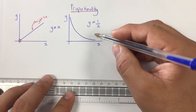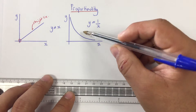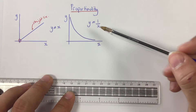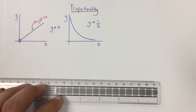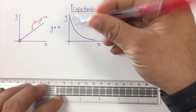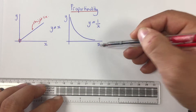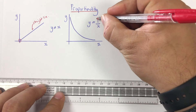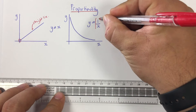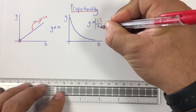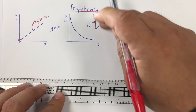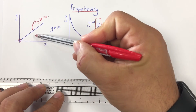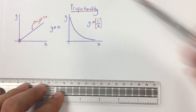If I wanted to get a graph of a straight line for an inversely proportional relationship, what I could do is, rather than plotting y against x, if I plot y against x to the minus 1 — or 1 over x, the reciprocal of x — then I would go back to a straight-line graph.